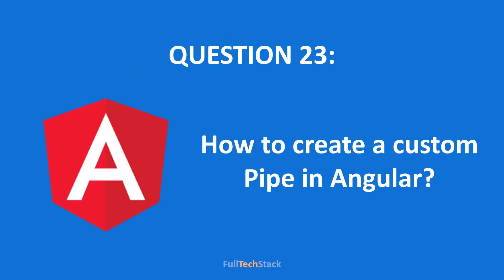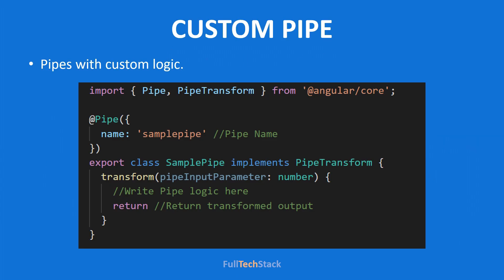A sure-shot question around pipes is how you can create a custom pipe. For creating a custom pipe, our primary step is to implement the PipeTransform interface that resides in the Angular core package, and then we can write our transformation code or logic inside the transform method.